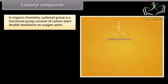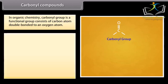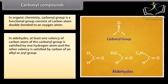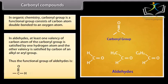Carbonyl compounds. In organic chemistry, a carbonyl group is a functional group consisting of a carbon atom double bonded to an oxygen atom. In aldehydes, at least one valency of the carbon atom of the carbonyl group is satisfied by one hydrogen atom, and the other valency is satisfied by carbon of an alkyl or aryl group. Thus, the functional group of aldehydes is CHO.